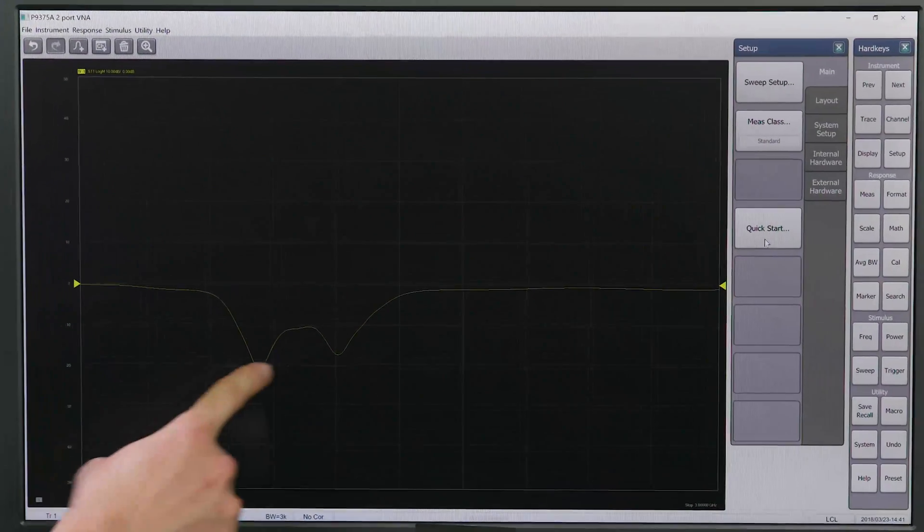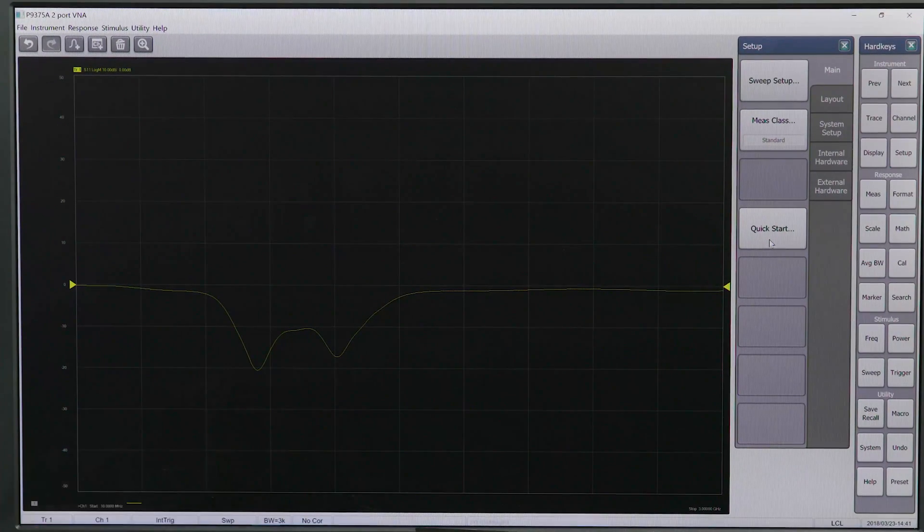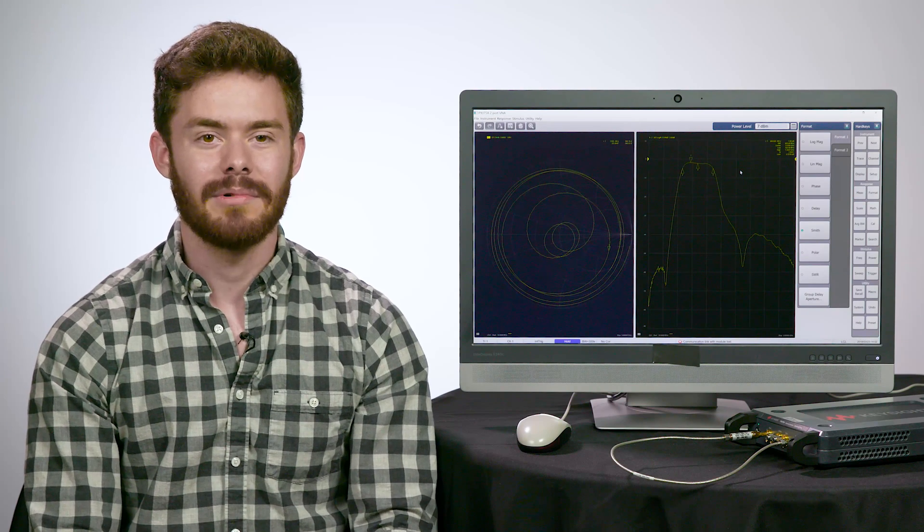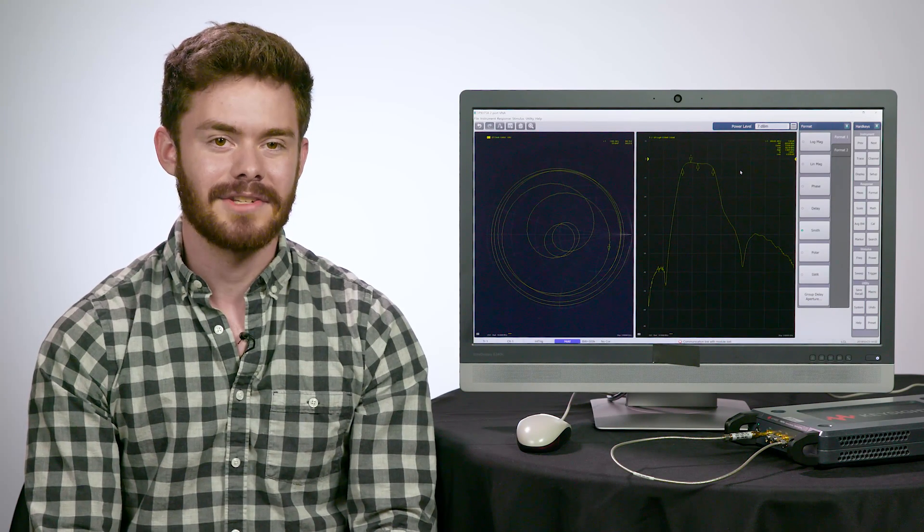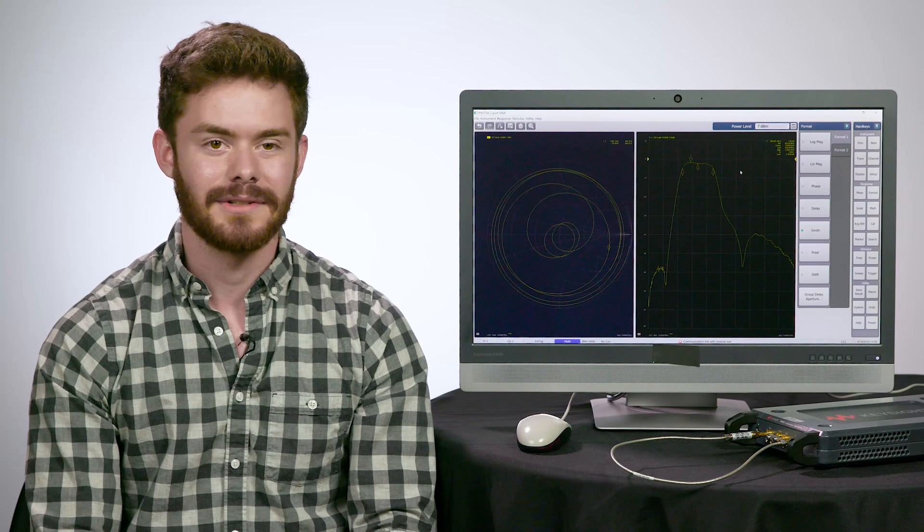We can see the measured S11 parameter in magnitude on the screen as the default parameter, just as we set in the quick setup. Let's take a look at the S21 parameter, which is the transmission between port 1 and 2. We'll do basic data analysis of our DUT, which is a bandpass filter.